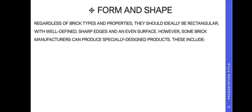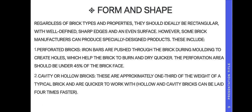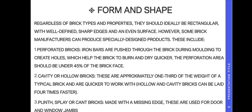Regardless of the brick types and properties, bricks should ideally be rectangular with well-defined sharp edges and an even surface. However, some brick manufacturers can produce specially designed products. These include perforated bricks, where iron bars are pushed through the bricks during molding to create holes, which help the bricks burn and dry quicker. The perforation area should be under 45 percent of the brick face. Hollow and cavity bricks weigh approximately one third of a typical brick, and cavity bricks can be used for faster builds or can be made with a missing edge for use at door and window jambs.